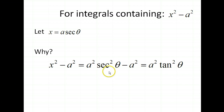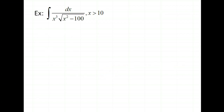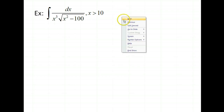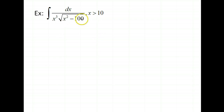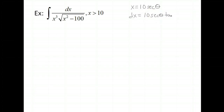Let's consider an example. In this integral, underneath the radical we have an x squared minus a squared situation. A u-substitution is not appropriate here because we don't have an x in the rest of the integrand that would be generated. So we should do a trig substitution. Since we have x squared minus 100, that's x squared minus 10 squared, so a equals 10 and we let x equal 10 secant theta.